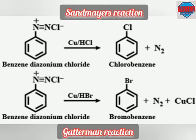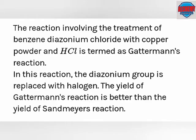The first reaction is Sandmeyer's reaction while the second reaction is Gartermann reaction. The reaction involving treatment of benzene diazonium chloride with copper powder and HCl is termed Gartermann's reaction. In this reaction, the diazonium group is replaced by halogen. The yield of Gartermann's reaction is better than the yield of Sandmeyer's reaction.